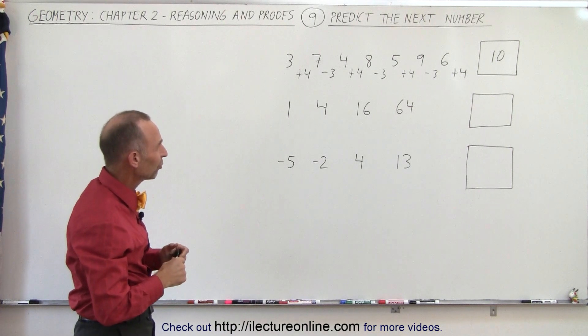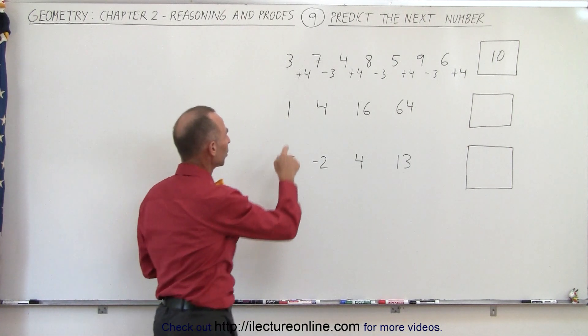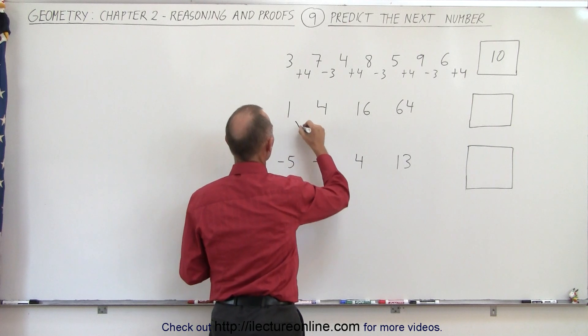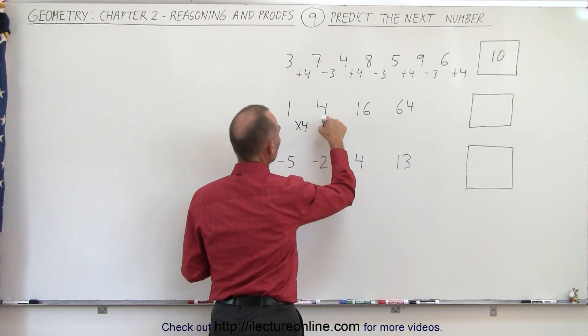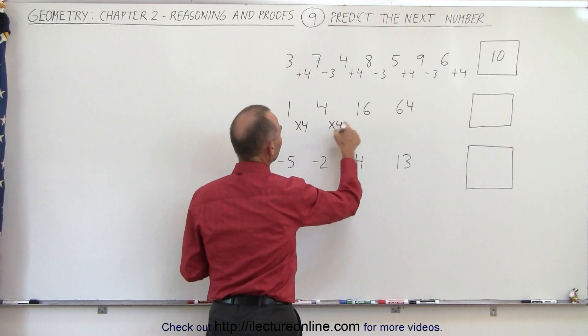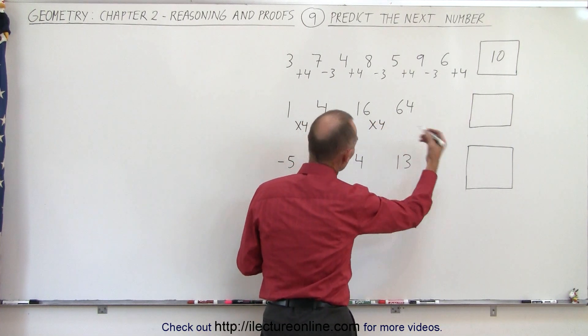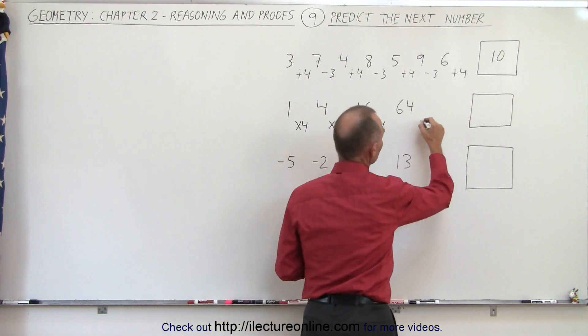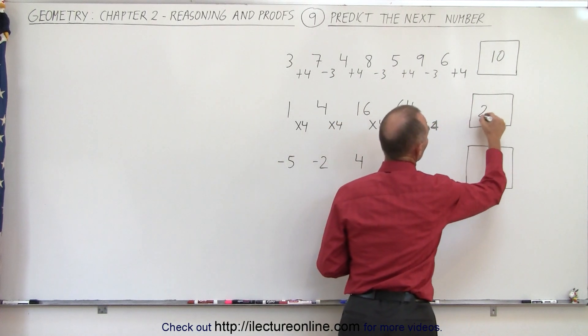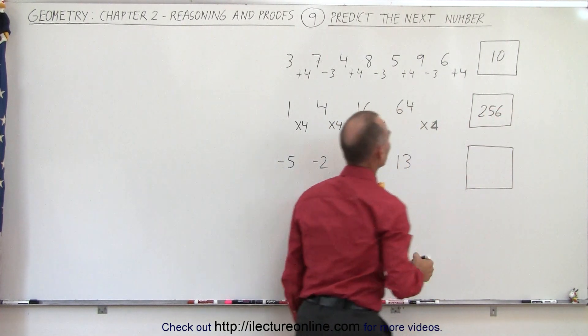Here it seems to make more sense when we multiply. If I multiply the first one times 4 I get the next number. If I multiply this times 4 I get the next number. If I multiply this times 4 I get the next number. So it looks the pattern holds. If I multiply this times 4 I should get the next number of 256.